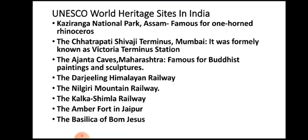There are several UNESCO World Heritage Sites in India. Kaziranga National Park is famous for the one-horned rhinoceros and is located in Assam. Chhatrapati Shivaji Terminus is in Mumbai, earlier known as Victoria Terminus Station. The Ajanta Caves of Maharashtra are famous for their Buddhist paintings based on Buddhist stories.